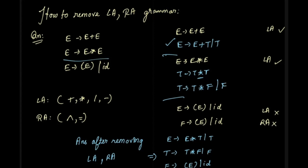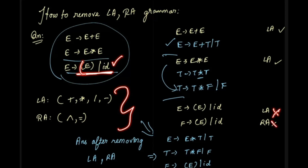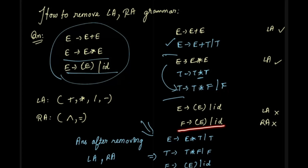If we remove the left-associativity, the final answer is the left-associative grammar. If we look at the bracket of E and another id, these two cases won't be left or right associative. But if the first variable is F, we substitute F to the bracket of E to get the final answer.